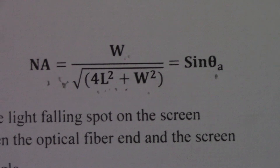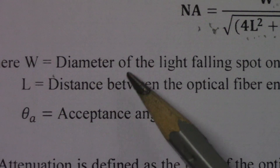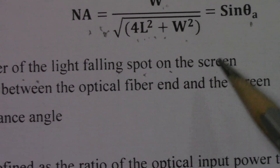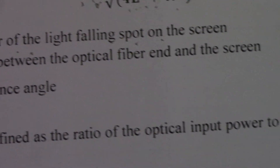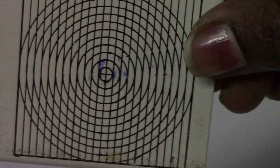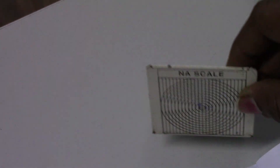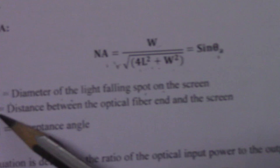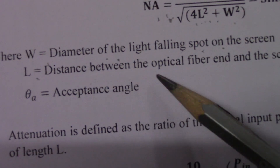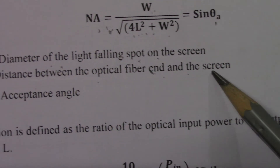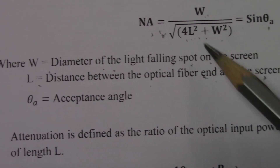Let us see what W and L are here. W is the diameter of the light falling spot on the screen — that screen being your numerical aperture screen. So W is the diameter of the light spot on that screen. Capital L is the distance between the optical fiber end and the screen.